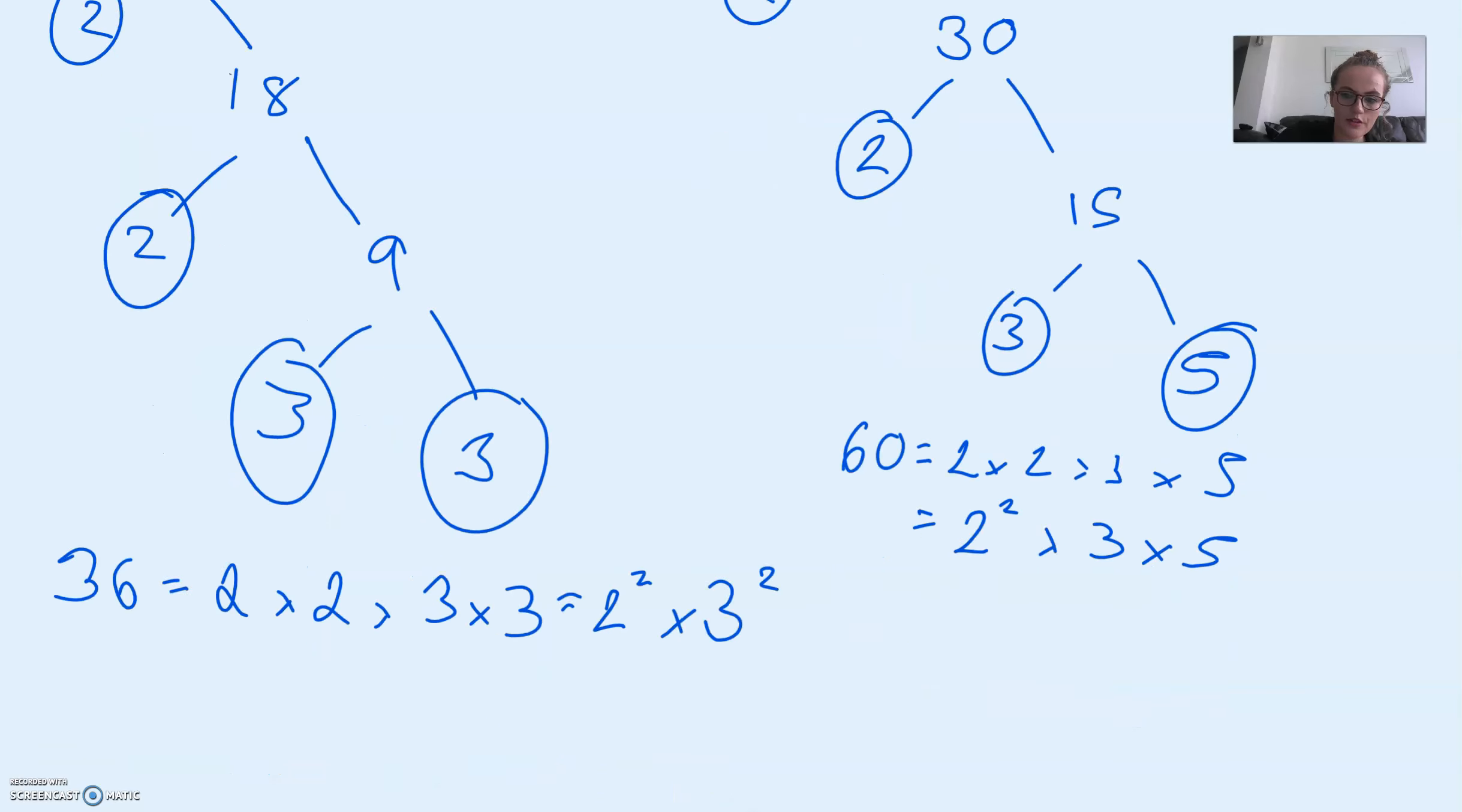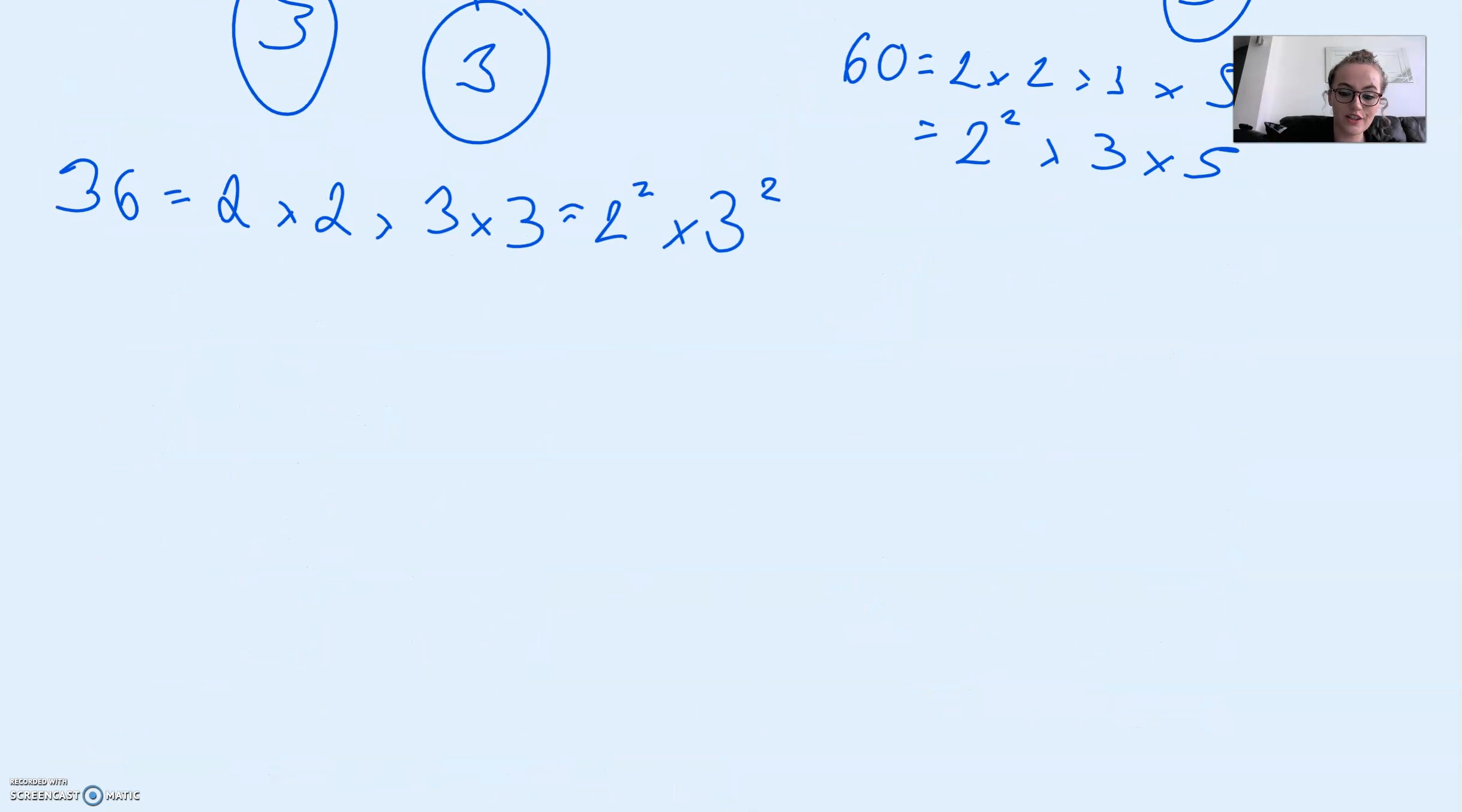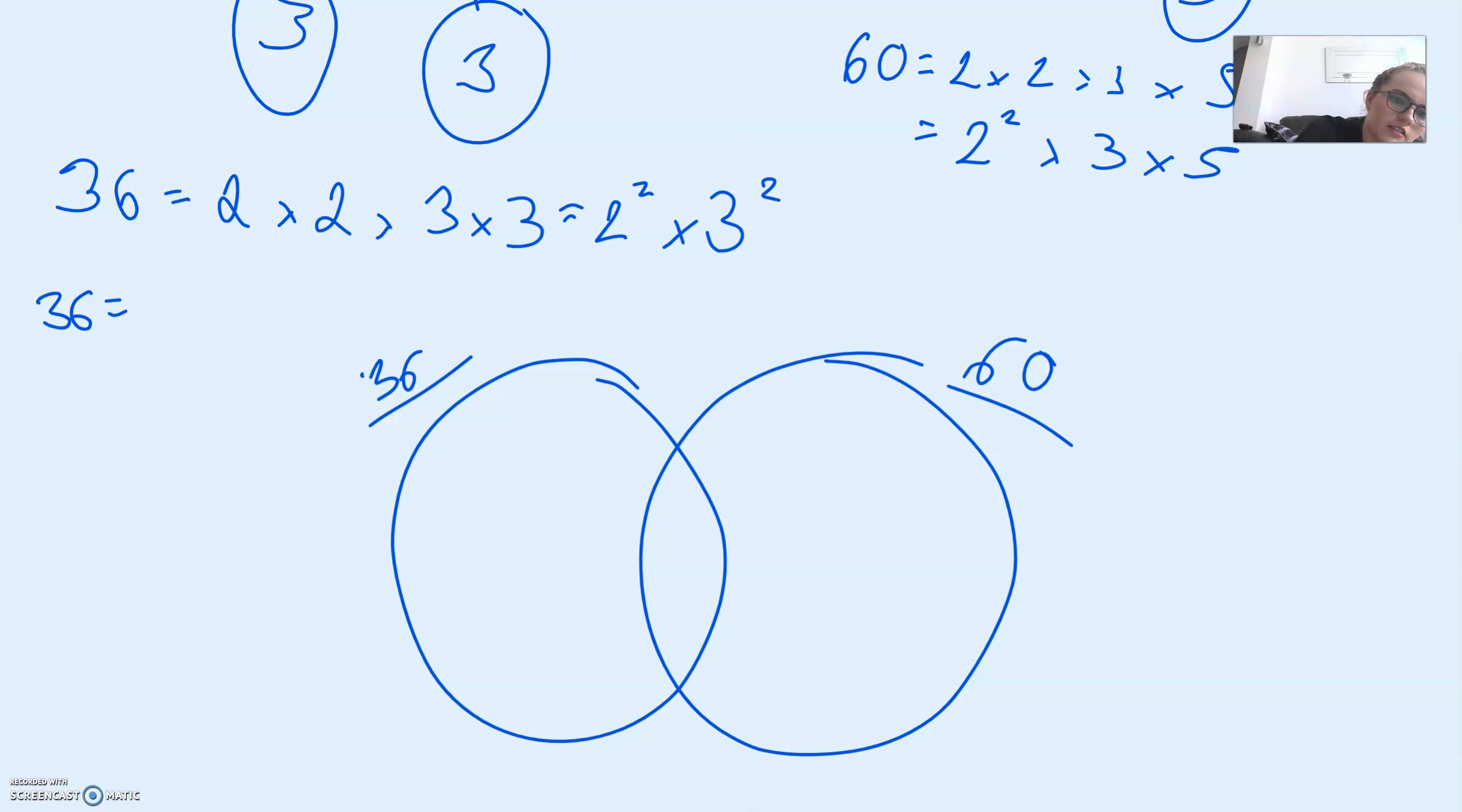Now what we want to do is put them in a Venn diagram. So I'm going to draw 2 overlapping circles and I'm going to call this side 36 and this side 60. So let me just write this to make it a bit clearer. 36 equals 2 squared times 3 squared, and 60 equals 2 squared times 3 times 5.